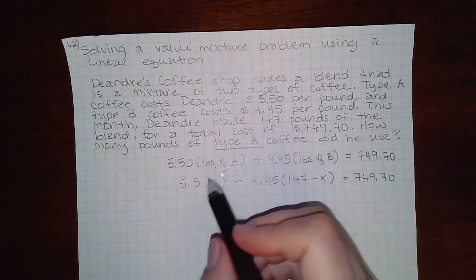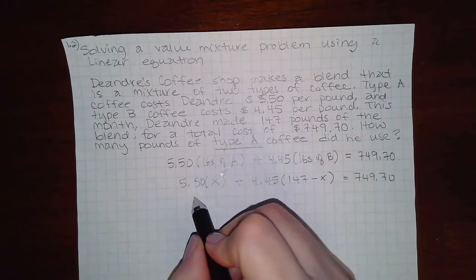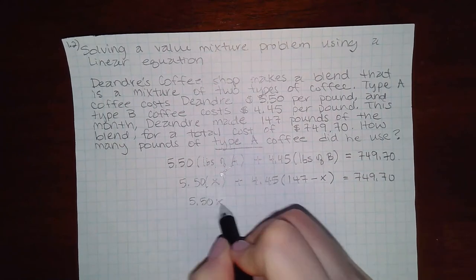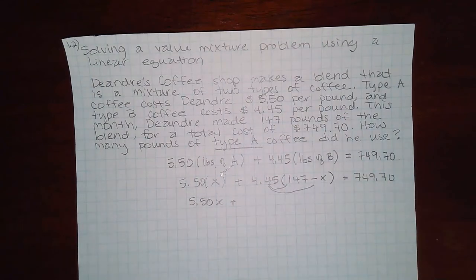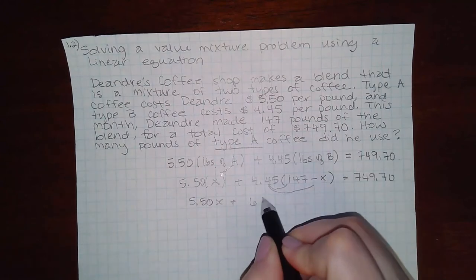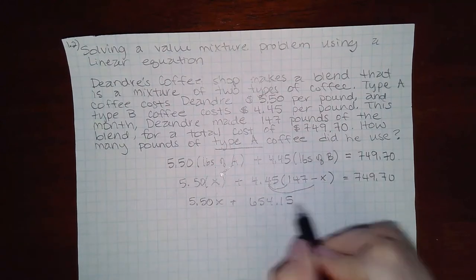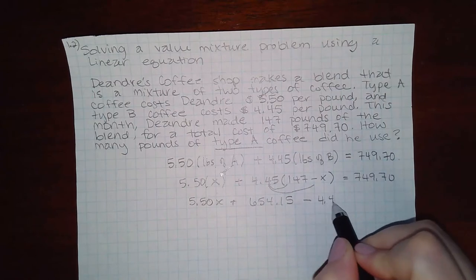So let's see. This would be 5.50X. This would actually be 654.15 minus 4.45X.